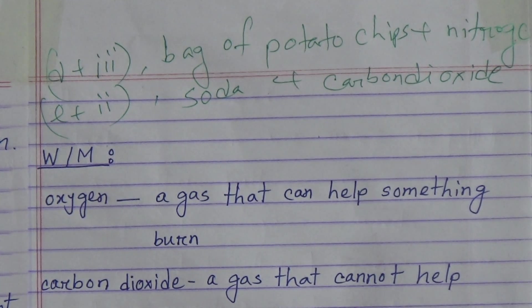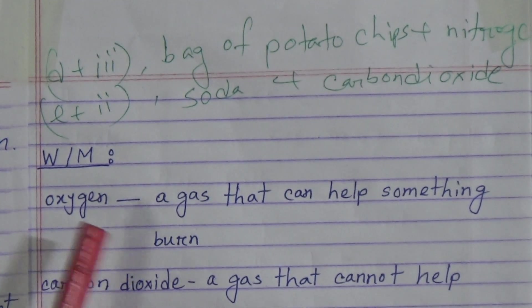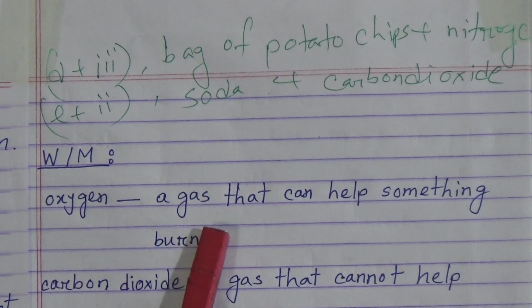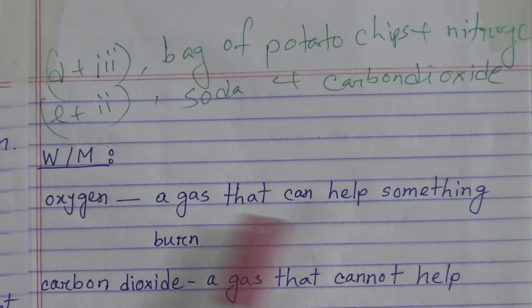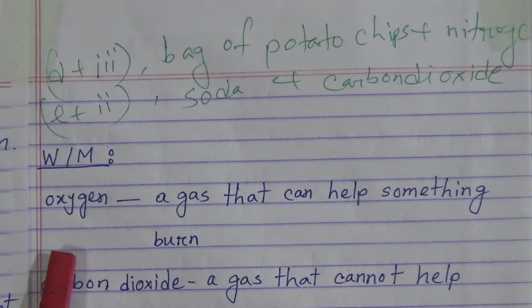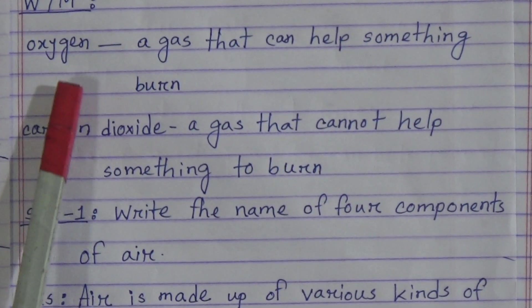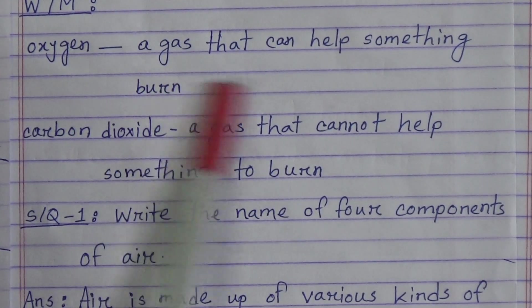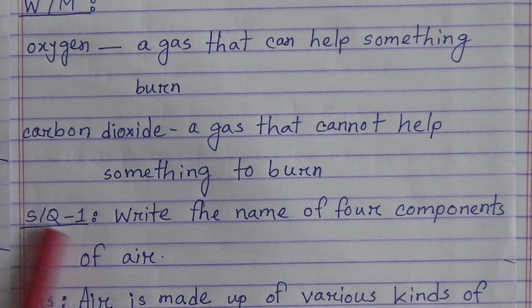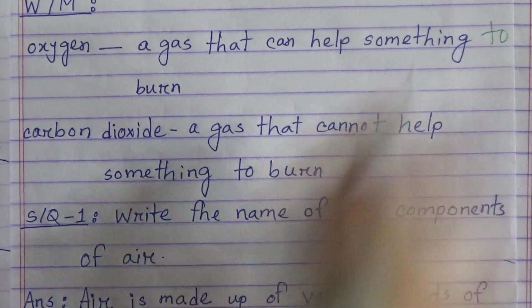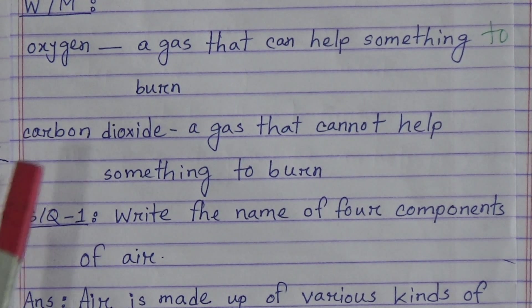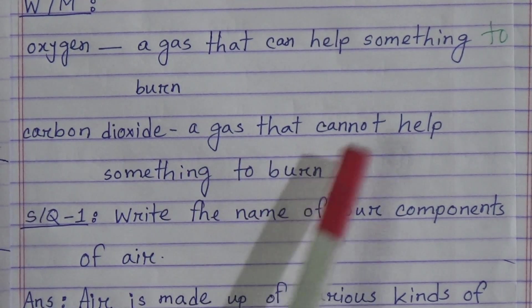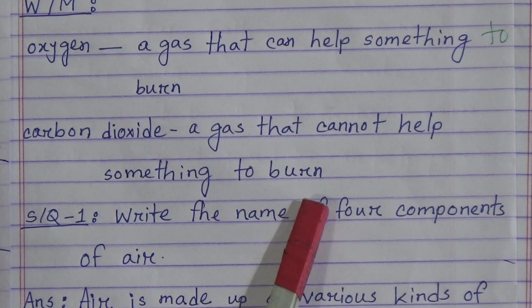Now word meanings. Oxygen — oxygen means a gas that can help something to burn. Carbon dioxide — carbon dioxide means a gas that cannot help something to burn.